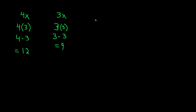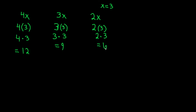What about 2x? Same thing again — just plug in the 3 that you've been told is your variable. Since x equals 3, it's the same thing as 2 times 3, which equals 6.